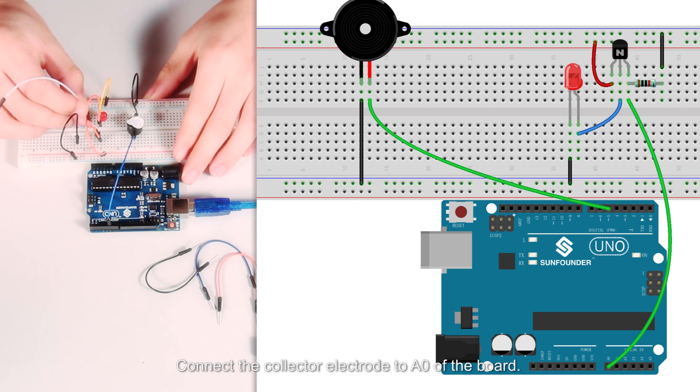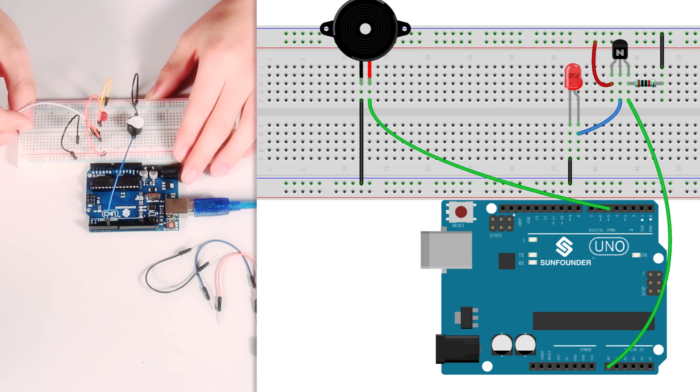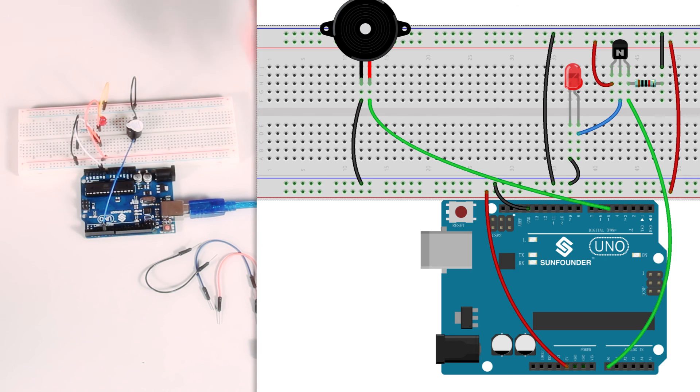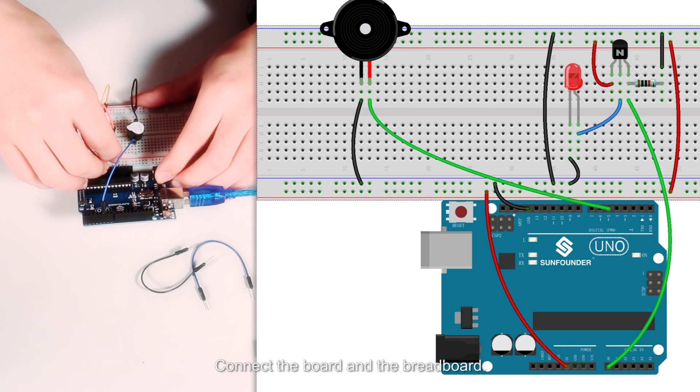Connect the collector electrode to A0 of the board. Connect the board and the breadboard.